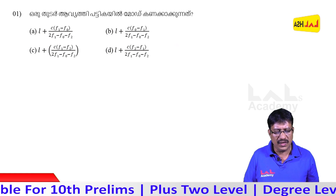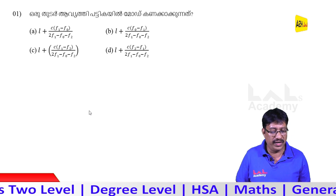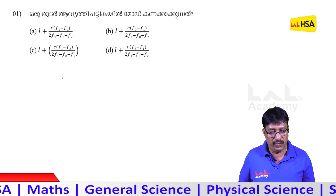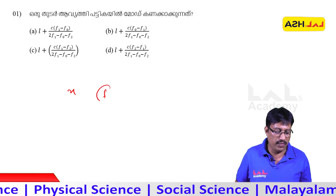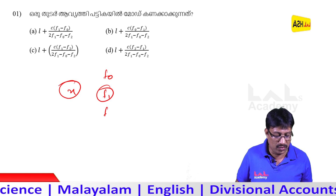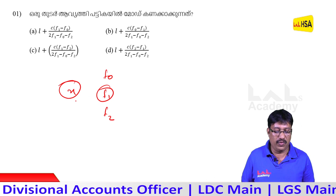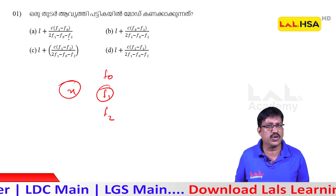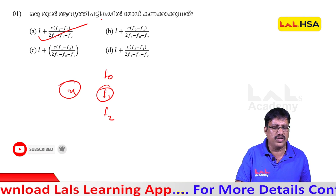We have three types of modes. The mode formula is: L1 plus C multiplied by F1 minus F0, divided by 2F1 minus F0 minus F2. F2 is completely different from F1. This applies to a continuous distribution and continuous series.